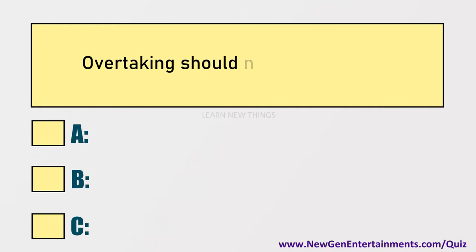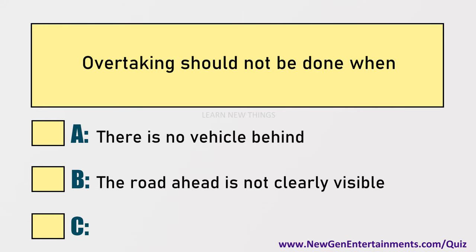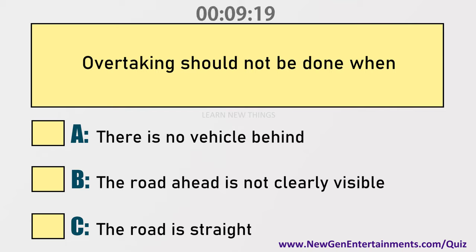Overtaking should not be done when: Options are: A) There is no vehicle behind, B) The road ahead is not clearly visible, C) The road is straight.